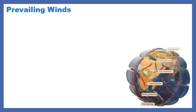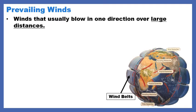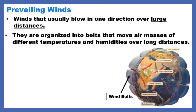Let's talk about prevailing winds — we did learn about these before. These are winds that blow long distances, and the diagram here makes the Earth look like it's wearing a puffy winter jacket with what appear to be clouds, but are actually wind belts. Prevailing winds usually blow in one direction over a large distance.